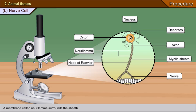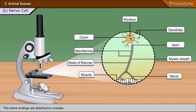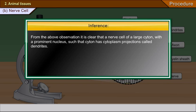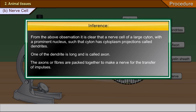At the nodes of Ranvier, the myelin sheath is absent. A membrane called neurilemma surrounds the sheath. The nerve endings are attached to muscles. Inference: From the above observation, it is clear that a nerve cell has a large cytone with a prominent nucleus. The cytone has cytoplasmic projections called dendrites, one of which is long and is called the axon. The axons or fibres are packed together to make a nerve for the transfer of impulses.